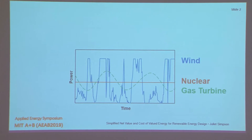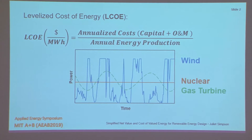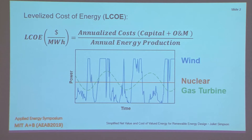These all have very different values to the system. But if you are designing, for example, a wind turbine, the metric you're going to be using to design this isn't going to take into account these different values. You're usually going to be using something like the levelized cost of energy, or LCOE. This is pretty standard for designing different types of energy systems. It takes into account your annualized costs and divides them by your annual energy production. These three technologies could all have very similar LCOEs, but they all have different production times — and that's really not taken into account in this metric.